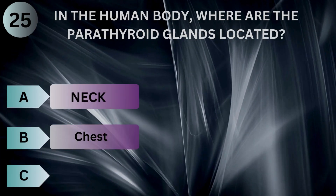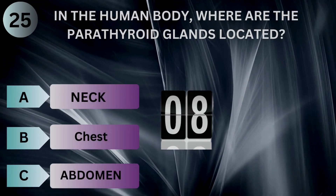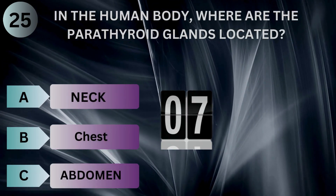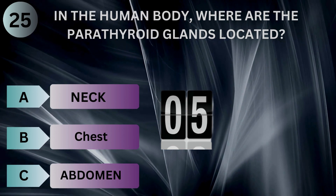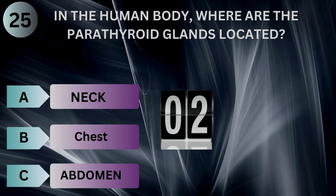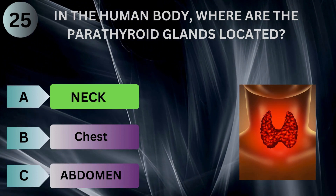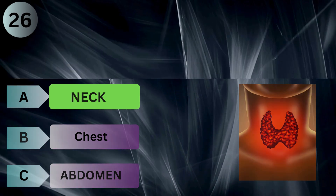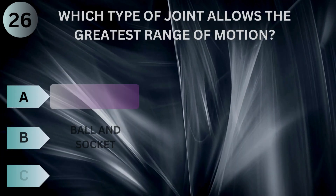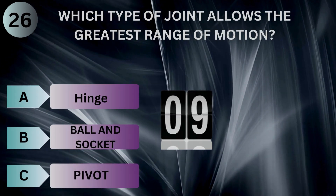In the human body, where are the parathyroid glands located? Which type of joint allows the greatest range of motion?